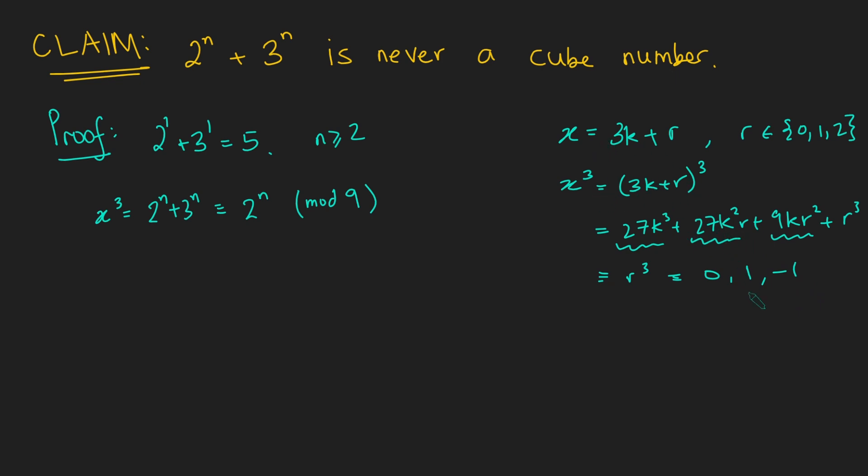So any number, when you cube it, will either be 0, 1, or minus 1. So we get this here, so I can say that 2 to the n must therefore either be 0, 1, or minus 1 mod 9.